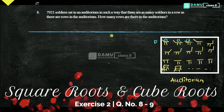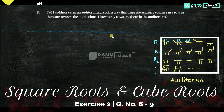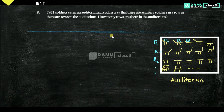So here we have rows — row 3, row 2, row 1 — and it goes such that there are as many soldiers in a row as there are rows in the auditorium. How many rows are there in the auditorium?